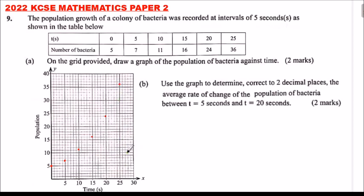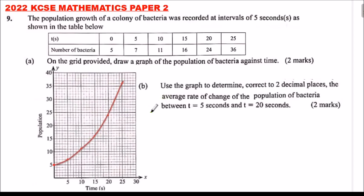Our table goes up to 25 seconds. With the points plotted, we now use a freehand smooth curve to join the points and come up with the graph. Try to make it as smooth as possible. By drawing that graph you get yourself two marks.